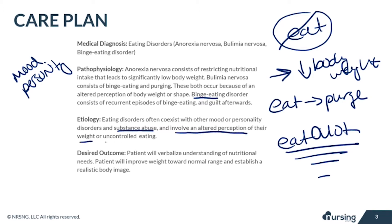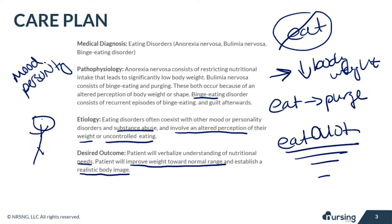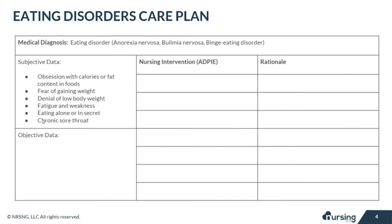The desired outcome is that the patient will verbalize understanding of their nutritional needs. We want them to improve their weight toward the normal range, whether larger or smaller, and they need to establish a realistic body image. We need them to realize their expectations are not realistic if they're very underweight.